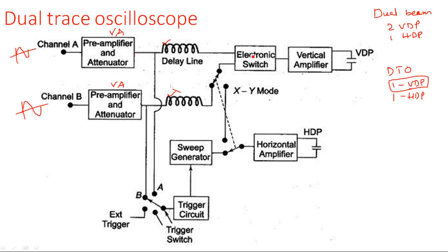The output of the delay line is connected to an electronic switch. This electronic switch is the key method used in the dual trace oscilloscope, and it was not present in the dual beam oscilloscope — because in the dual beam oscilloscope two separate vertical deflection plates were used. Here, with a single set of vertical deflection plates, the electronic switch connects one time to Channel A and one time to Channel B.